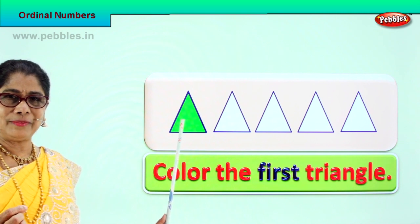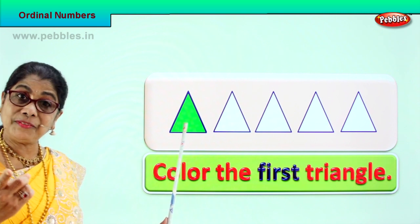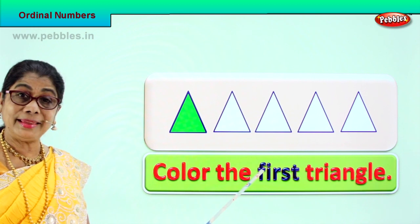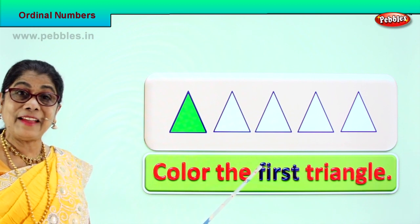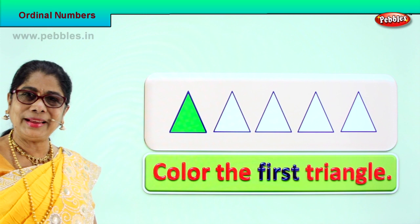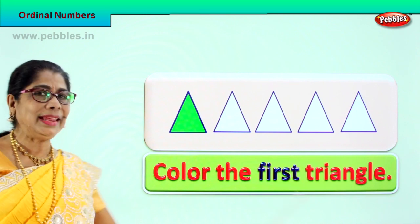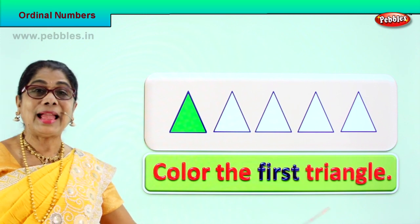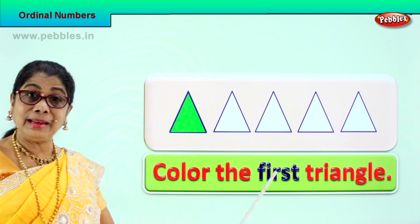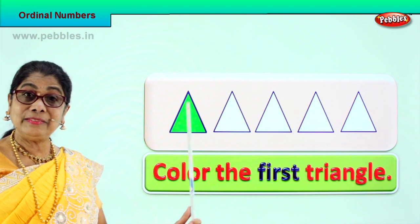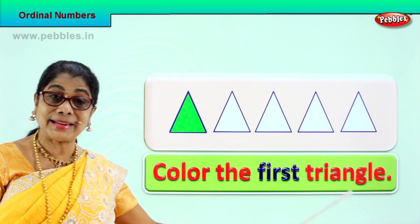The first triangle we have colored green. Spell first: F-I-R-S-T. First. Did you learn? Yes. We learn to read, and we learn the spelling of ordinal numbers, we learn to color as per the instruction.